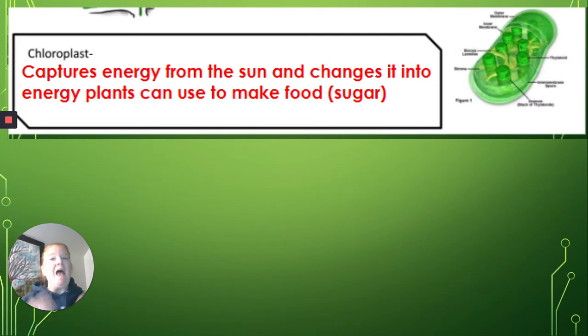A chloroplast. A chloroplast has a job of capturing energy from the sun and changing it into energy plants can use to make food, sugar, or glucose. So plants, they take the energy from the sun and convert it into chemical energy that's stored in the bonds of glucose. And that energy can be used when it's needed by plants or by animals. But we need the plants in chloroplasts to store that energy in terms of glucose.